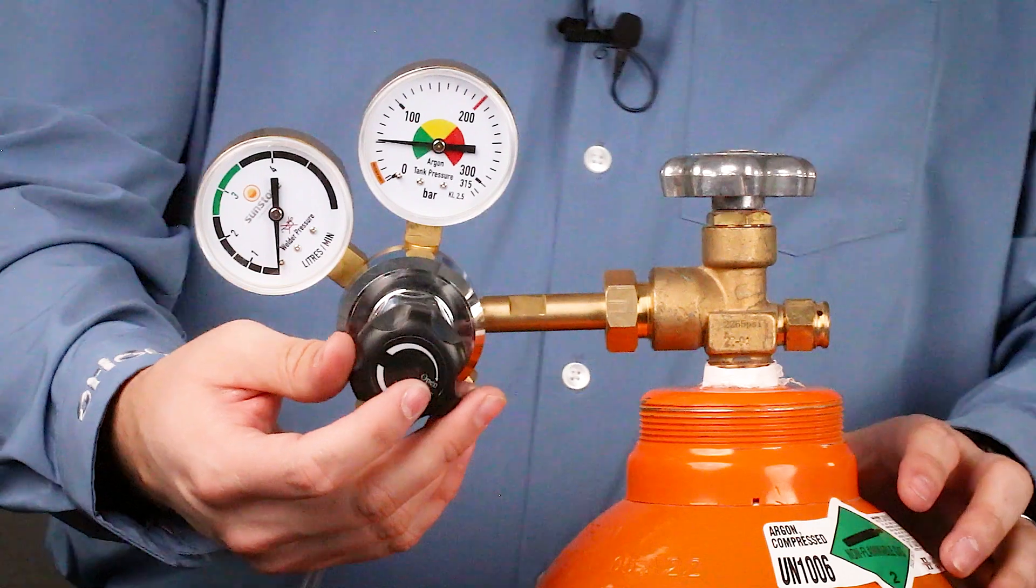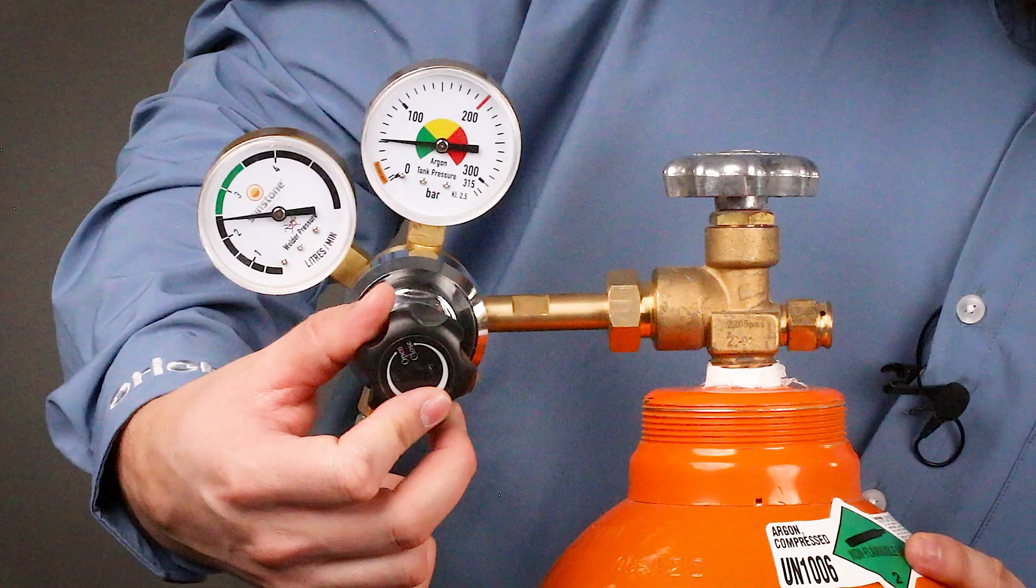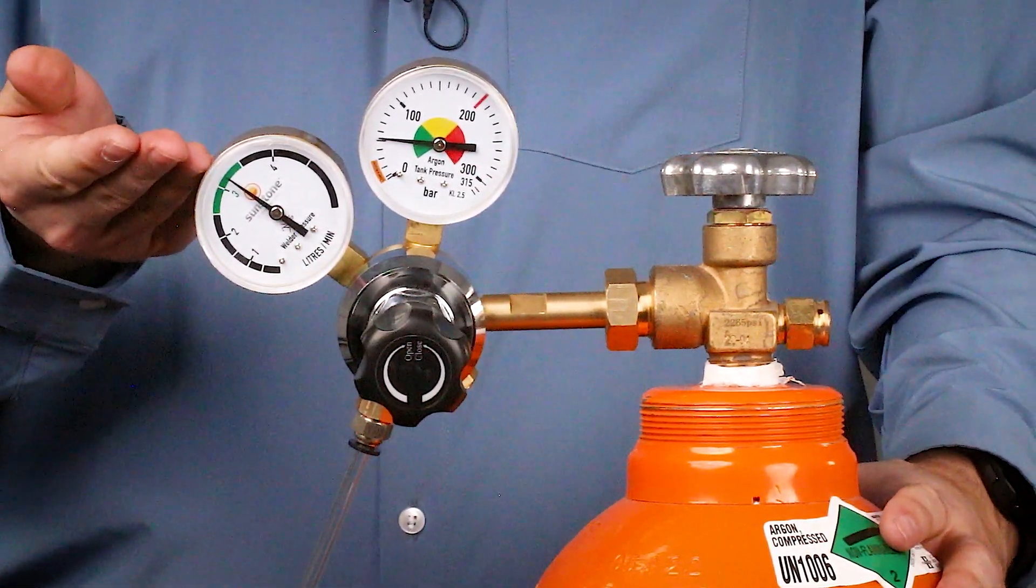Then we can slowly turn that knob until we reach somewhere in the middle of that green zone. Now our regulator is set.